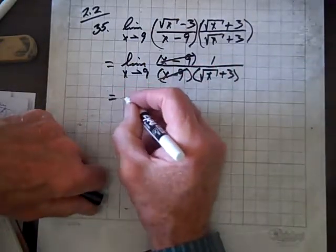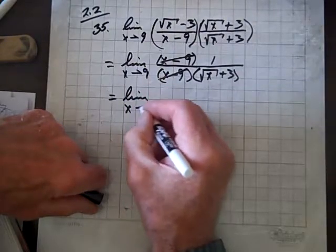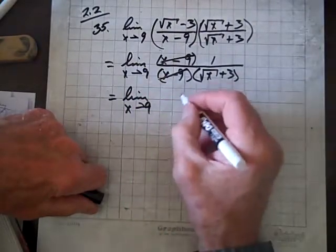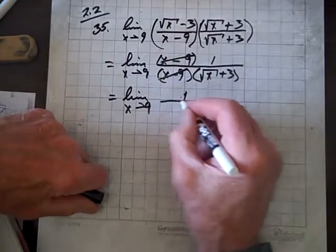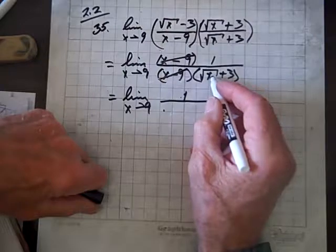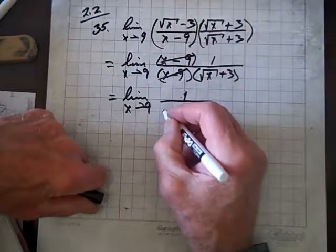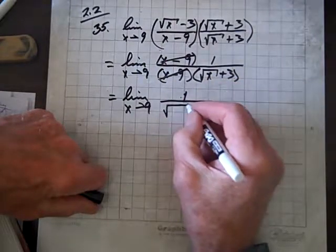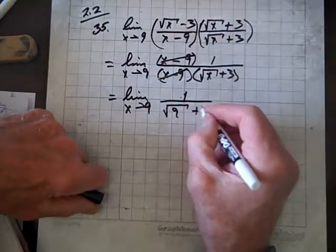So this equals the limit as x goes to 9 of 1 over, and now we'll let x take on the value of 9, the square root of 9 plus 3.